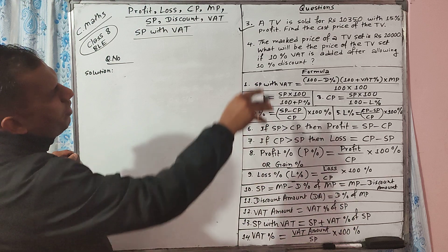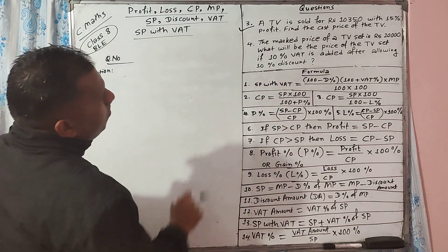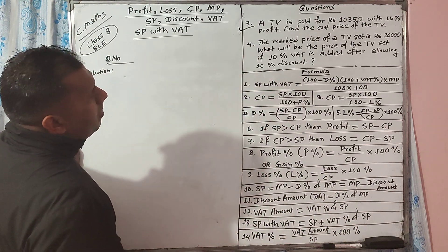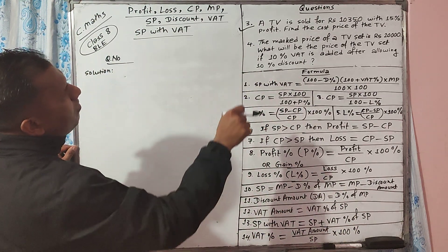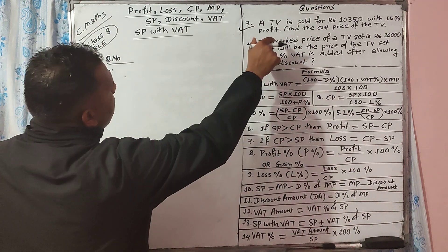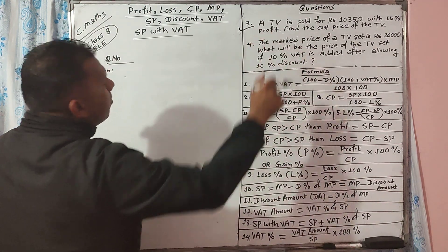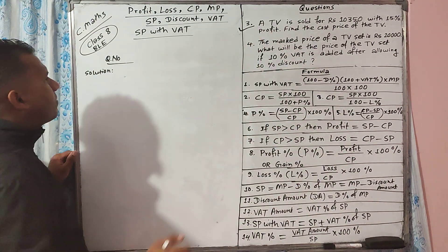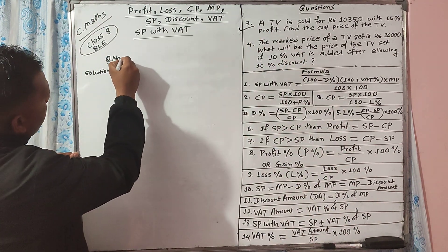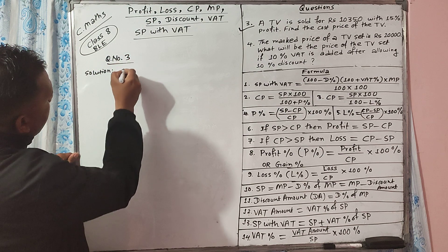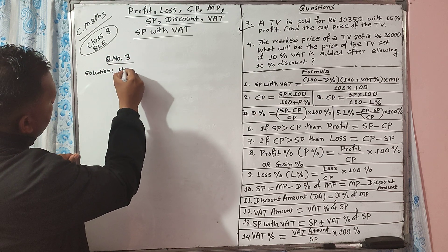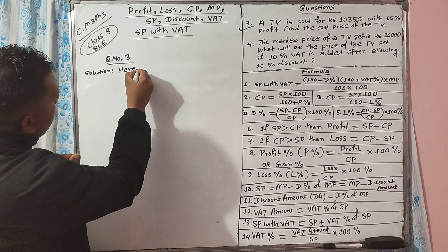A TV is sold for rupees 10,350 with 15% profit. Find the cost price of the TV. Let's start this solution — question number 3.